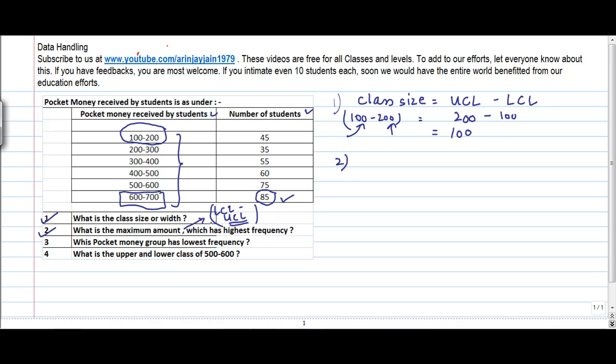So what is the maximum amount which has the highest frequency? This actually should have been maximum, what is the class interval. So in this, the class interval with maximum frequency is 600 to 700. So the number of students who fall within the 600 to 700 pocket money bracket are the highest.